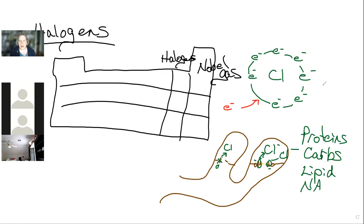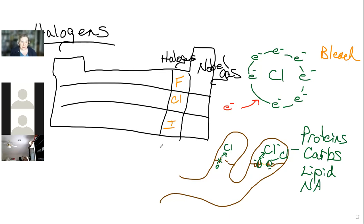Chlorine is the active ingredient in bleach. Fluorine is first on the periodic table but we generally don't talk about it as an external control agent. Then there's chlorine, and then bromine. Those three are the ones you need to know for the exam because they are the most commonly used halogens as the active ingredient in microbial control products.